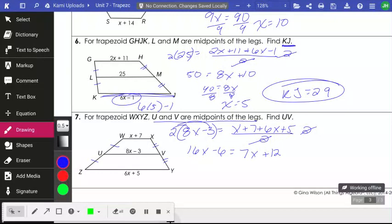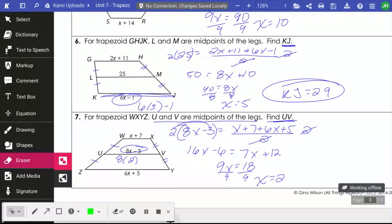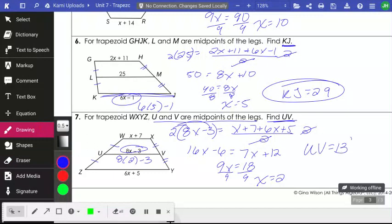So I'm going to minus 7X from both sides and add 6 to both sides so that I have 9X is equal to 18. Divide both sides by 9 and I'll get X is equal to 2. It asked me to find UV. UV is this here. So I'll do 8 times 2 minus 3. And 8 times 2 is 16, and 16 minus 3 is 13. So UV is equal to 13. It's the same process over and over again, just your X is sometimes in a different location.